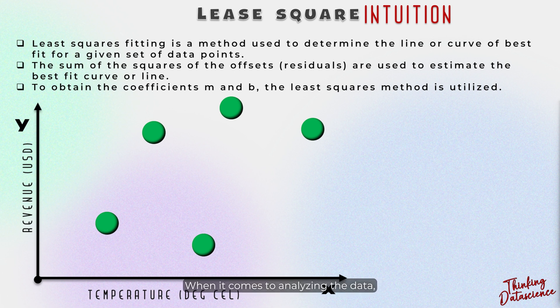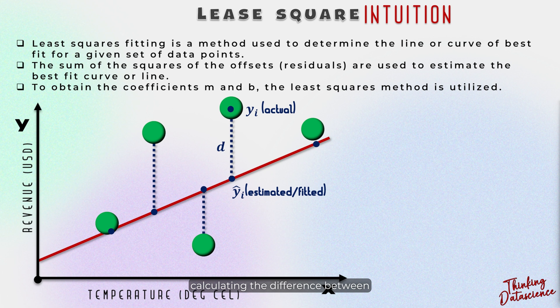When it comes to analyzing the data, finding the best line to fit through the set of data points is very crucial. But how do we determine which line is the best fit? It all starts with creating a random line and then calculating the difference between each data point and the true points.